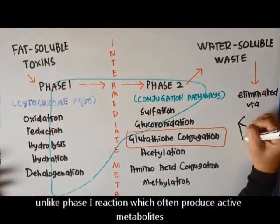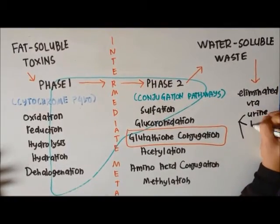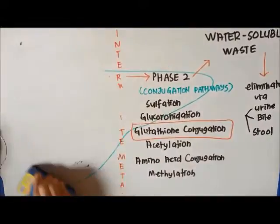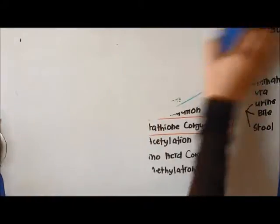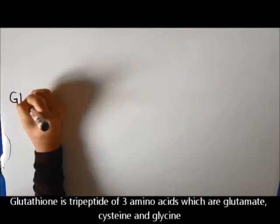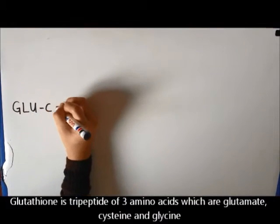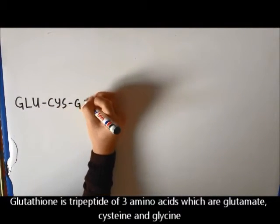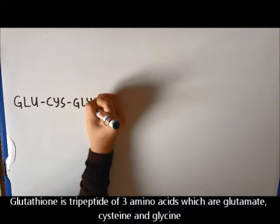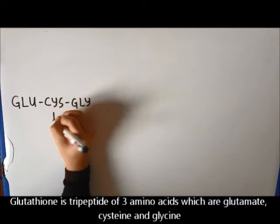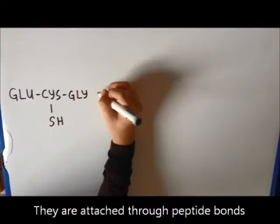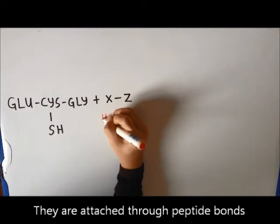Let's start on glutathione conjugation. Glutathione is a tripeptide of three amino acids: glutamate, cysteine, and glycine. They are attached through peptide bonds.